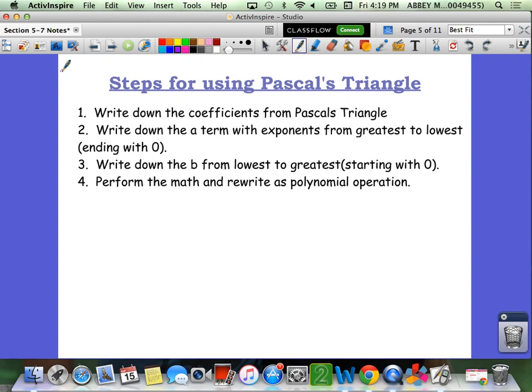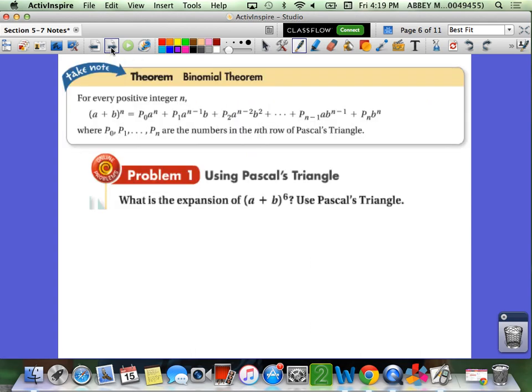My last step, we're just going to perform the math and rewrite as a polynomial operation. So, on problem number one, there is the binomial theorem written at the top, but this will make a lot more sense when I go through the problem. What is the expansion of (A+B) to the sixth power using Pascal's triangle? We don't want to sit here and foil all of these out. That would be ridiculous. This is why we use Pascal's triangle. We're going to be efficient.